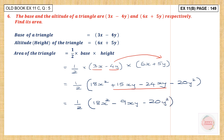So this is your answer: half of 18x squared minus 9xy minus 20y squared is the area of the triangle, and since it is area, it is in square units.